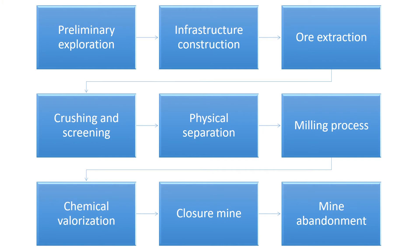Generally, any type of ore extraction method follows the same steps and phases. We have first preliminary exploration; second, infrastructure construction, including ground handling, material handling, and pipeline; third, ore extraction; then crushing and screening, which involves the reduction of particle size in the ore body after extraction; followed by physical separation, like magnetic separation or gravity concentration; monitored by milling process, known also as fine grinding or pulverizing, which reduces material to a powder; then chemical valorization, known also as ore dressing, the process separating valuable minerals from their ore; then mine closure; and finally, mine abandonment.